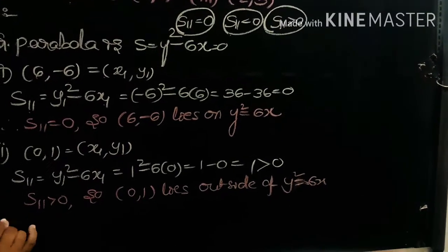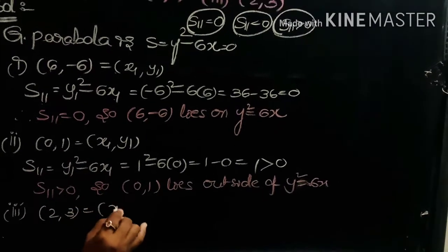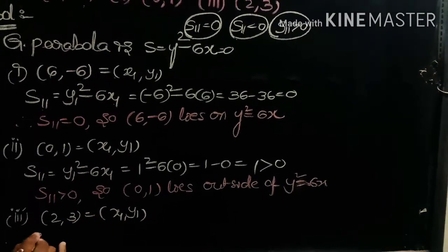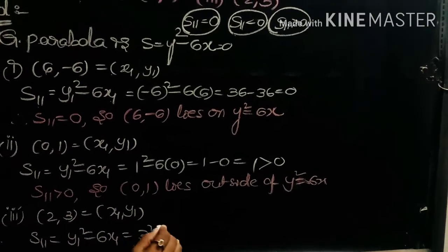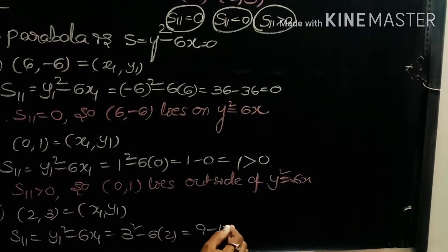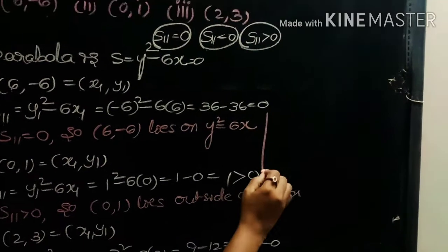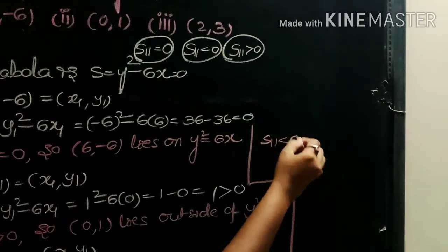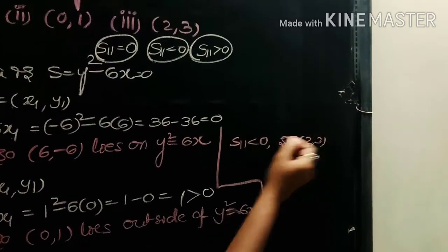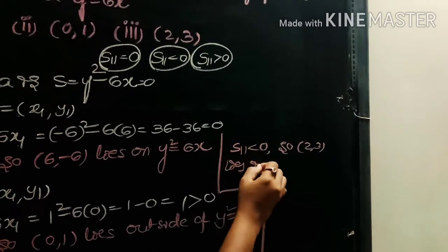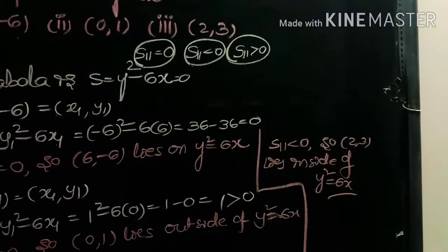For the third point (2, 3), we take x₁ = 2 and y₁ = 3. Then S₁₁ = y₁² − 6x₁ = 3² − 6(2) = 9 − 12 = −3, which is less than 0. Therefore S₁₁ < 0, so the point (2, 3) lies inside the parabola y² = 6x.